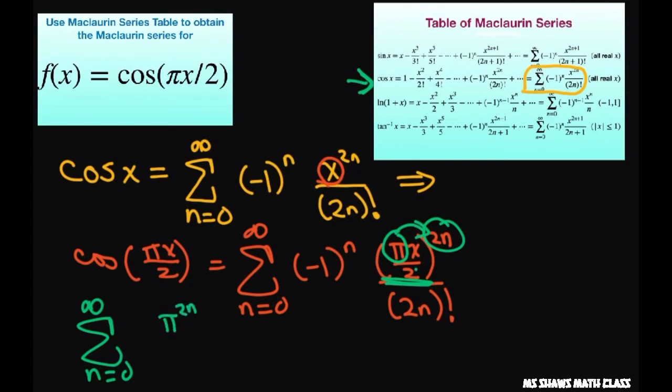And then this 2 to the power of 2n is going to go in the denominator. So I'm going to write 2 to the power of 2n. Now, I still have this x to the 2n power. I'm going to pull it out here. So I'm going to write x to the power of 2n.